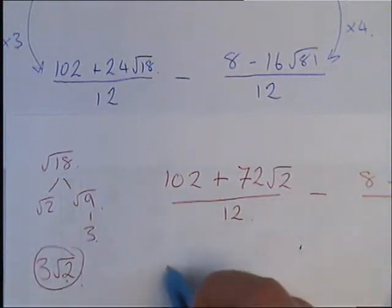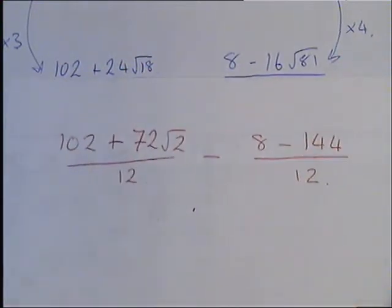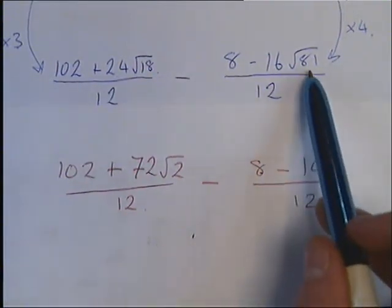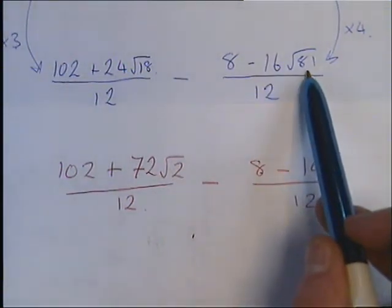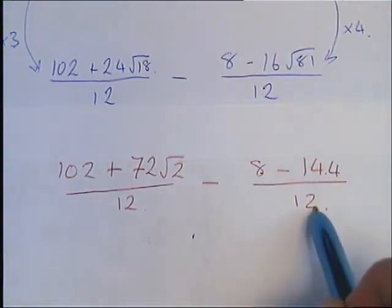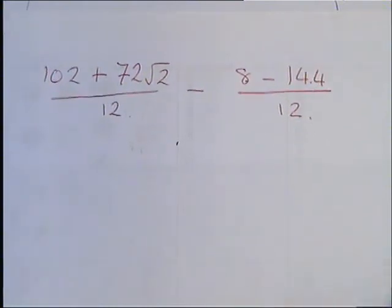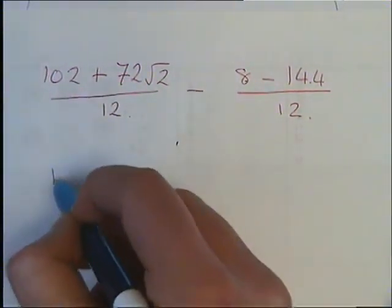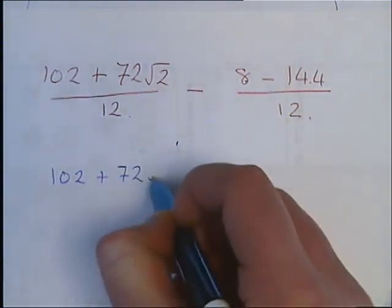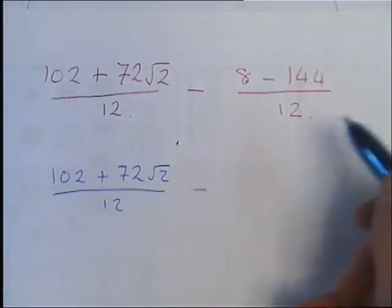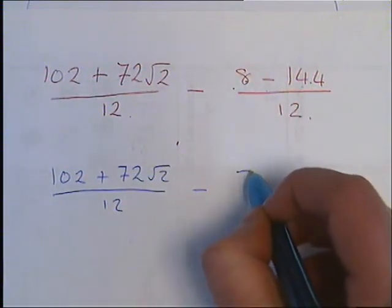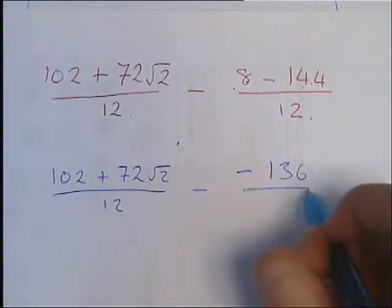We can work this bit out. So 8 minus 144, so 144 came from our root 81, which is just 9 times 16. So 16 times 9 gives us 144, all over 12. If we then work out this fraction here, because this can be simplified down, over 12 take away 8 minus 144, it's going to give us minus 136 over 12.